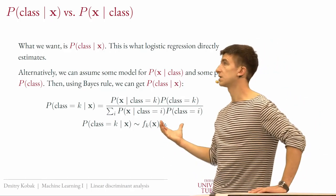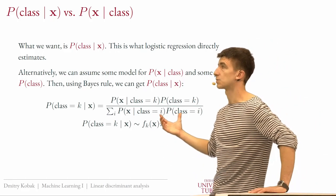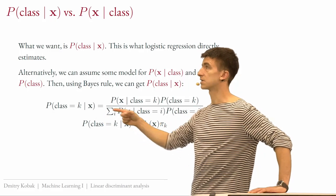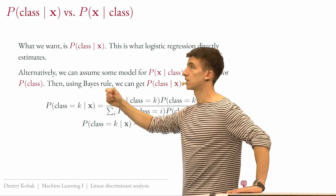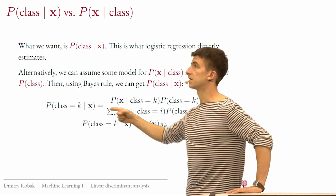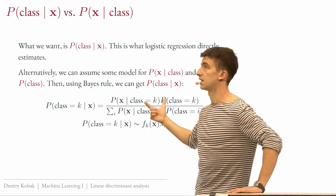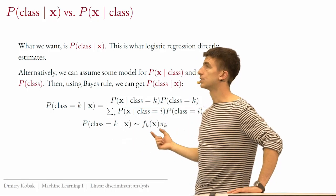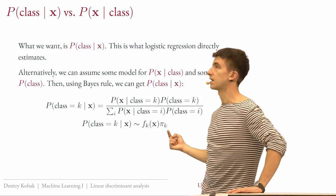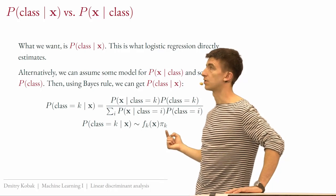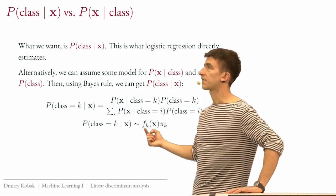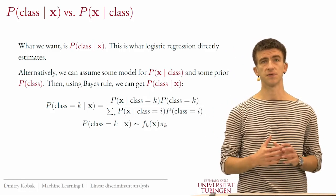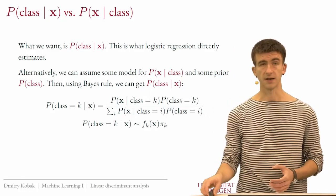The denominator is not super important if you just want to choose a class, because it's the same for all classes. You just find the class for which the numerator is largest. I'll denote the prior as π_k and f_k(x) as the probability distribution function of the data in class k.